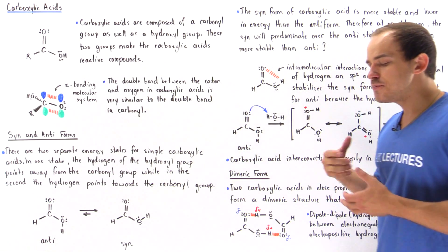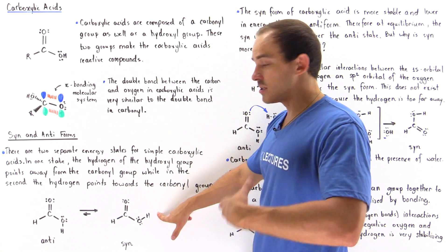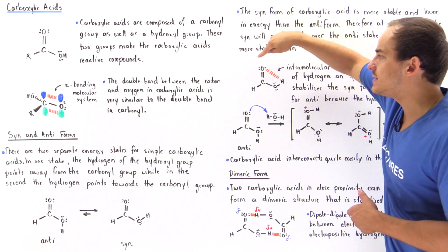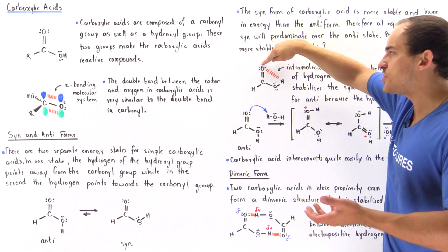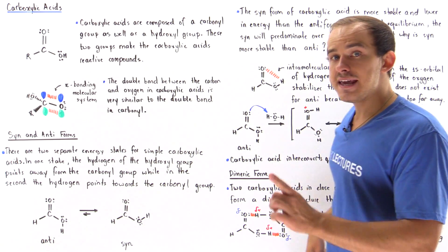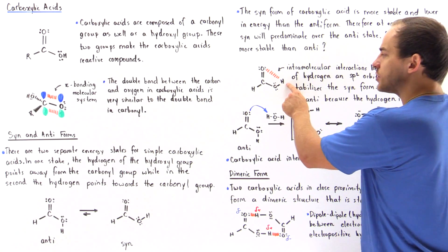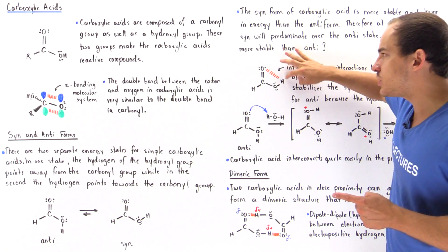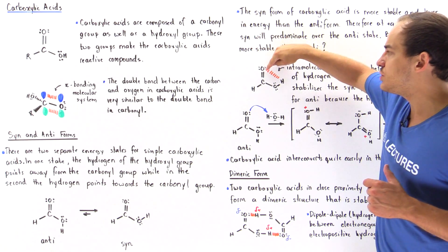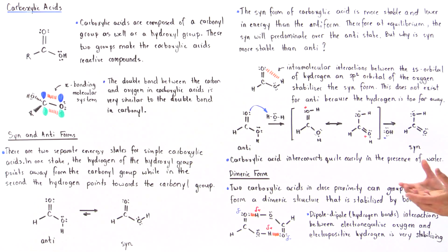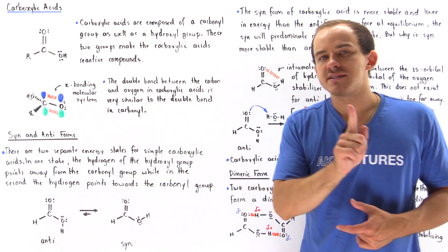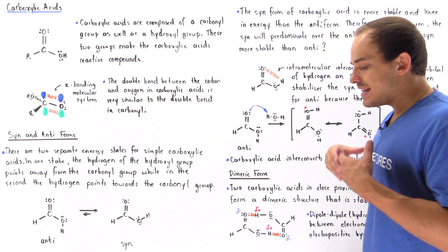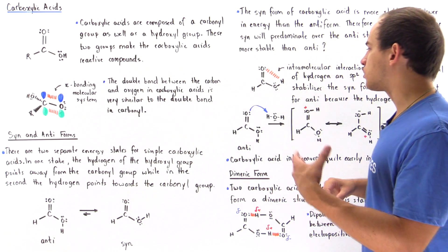Recall that oxygen is more electronegative than the H atom, so the H atom is electropositive and the oxygen is electronegative. In the syn form, we have the H atom in close proximity to the oxygen. The electronegative oxygen, which bears a partial negative charge, interacts via intramolecular forces with the electropositive H atom, which has a partial positive charge. The 1s orbital of the H interacts with the sp2 hybridized orbital of this oxygen, forming a stabilizing system. This takes place within the syn but not within the anti because the oxygen is simply too far away from the H. So at equilibrium, the syn form predominates.